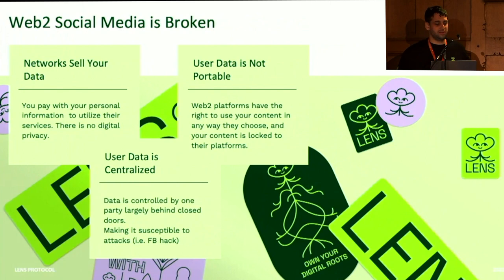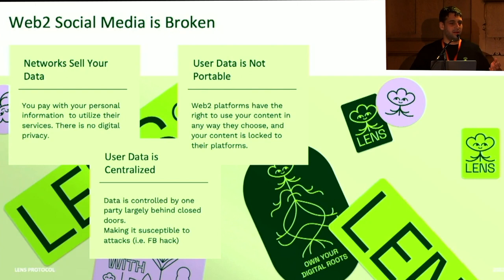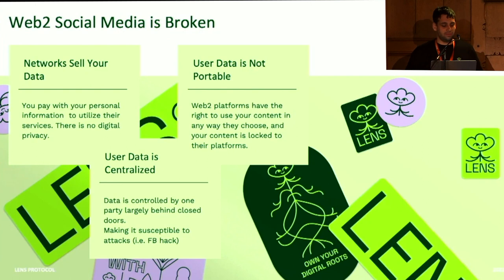Web2 social media is broken. From a fundamental perspective, there are three key issues. First off, networks sell your data. Every free service you're used to — Facebook, Instagram, Snapchat, but even other services like OpenTable or Eventbrite — they're taking your data and they're selling it. And that's okay, that's a trade-off many are willing to make, but we don't really have an option to matter.